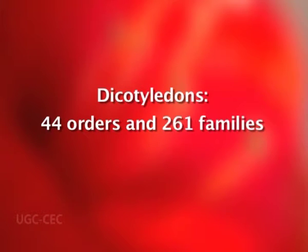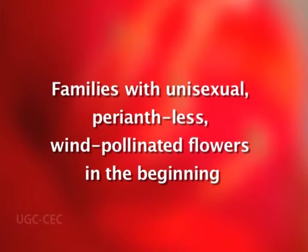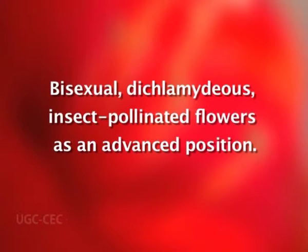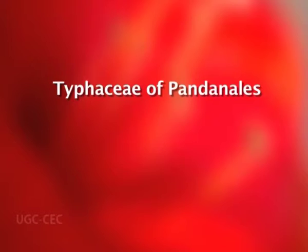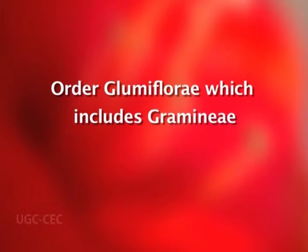Dicotyledons are classified into 44 orders and 261 families. In both monocotyledons and dicotyledons, they placed families with unisexual, parentless, wind-pollinated flowers at the beginning, and those with bisexual, dichlamydeous, insect-pollinated flowers in an advanced position. Thus the angiosperms are arranged in an ascending series according to increased complexity and elaboration of flowers. The Monocotyledons includes 11 orders which have naked unisexual flowers. The Typhaceae of Pandanales is considered to be more primitive; the family Orchidaceae is considered more advanced and is placed at the end in the order Microspermae.